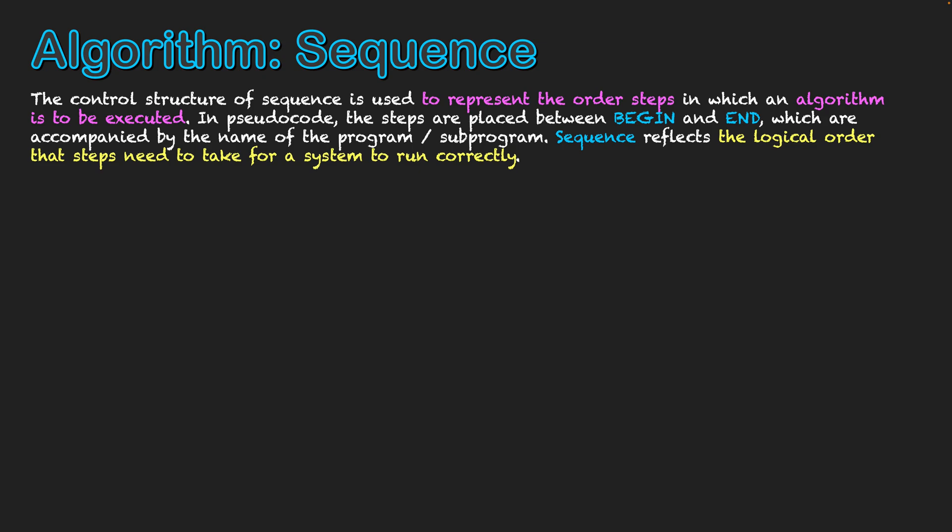This will lead to logical errors and the system, when we actually program it, is not going to work. We ensure this through the control structure of sequence when creating our algorithm.